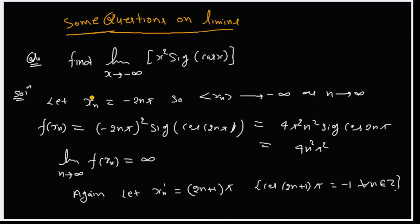We have a sequence here. The sequence is xₙ equal to minus 2πn. As n tends to infinity, this sequence tends to minus infinity. When the sequence tends to minus infinity, we can evaluate the function along this sequence.